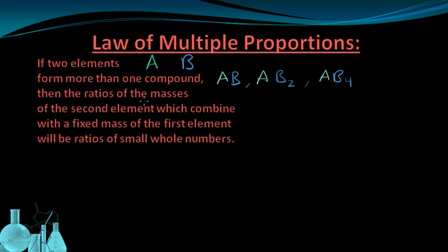Then the ratios of the masses, which tells us we're looking for a mass ratio, just like we did in the last video. Then the ratios of the masses of the second element, that's element B, which combined with a fixed mass of the first element, that's element A, will be ratios of small whole numbers. That means 1, 2, 3, etc.